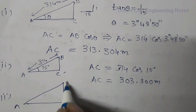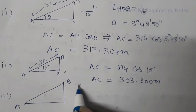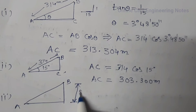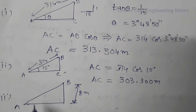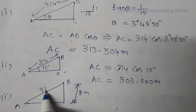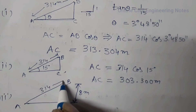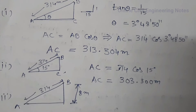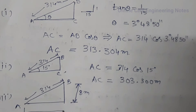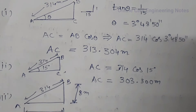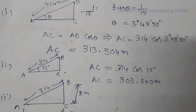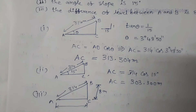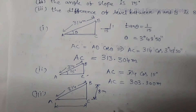Third question: the difference of level between A and B is 8 meters. This vertical distance is 8 meters, and the sloping distance is 314 meters. We have to find the horizontal distance.